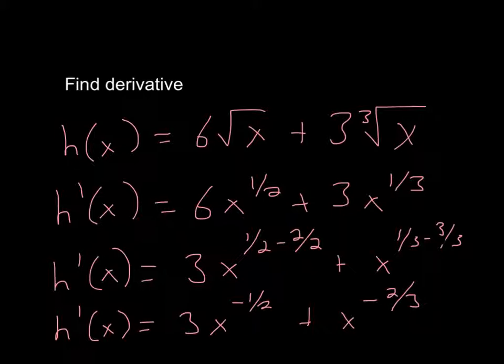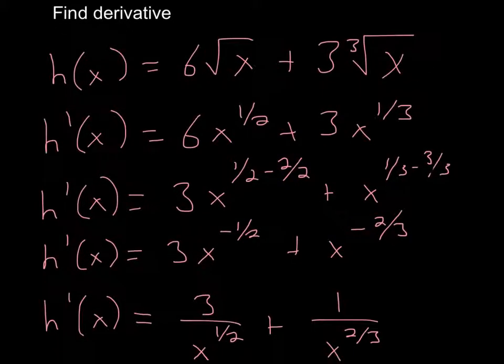So now what you do is just power rule. So I'll bring the exponent down, multiply it by whatever is there. So 6 times 1 half is 3. And then what you do is subtract by 1 from whatever that exponent was. So 1 half minus 1. Well, 1 can be written as 2 over 2.